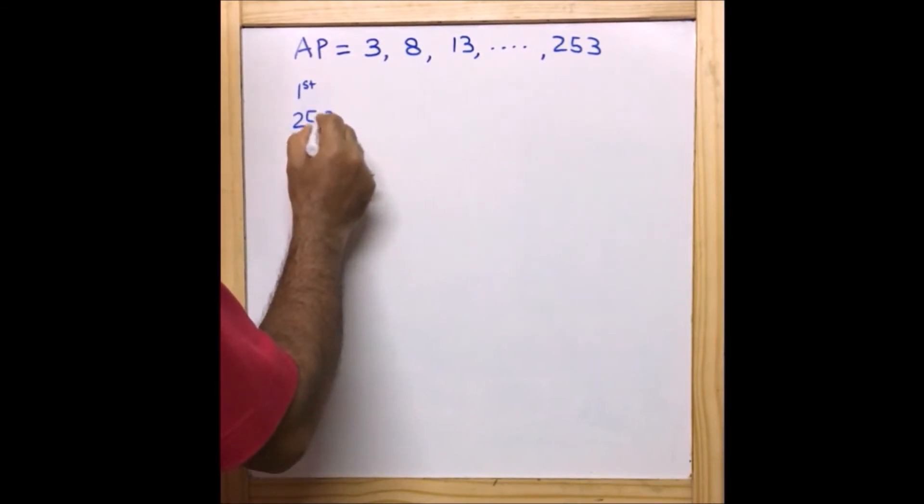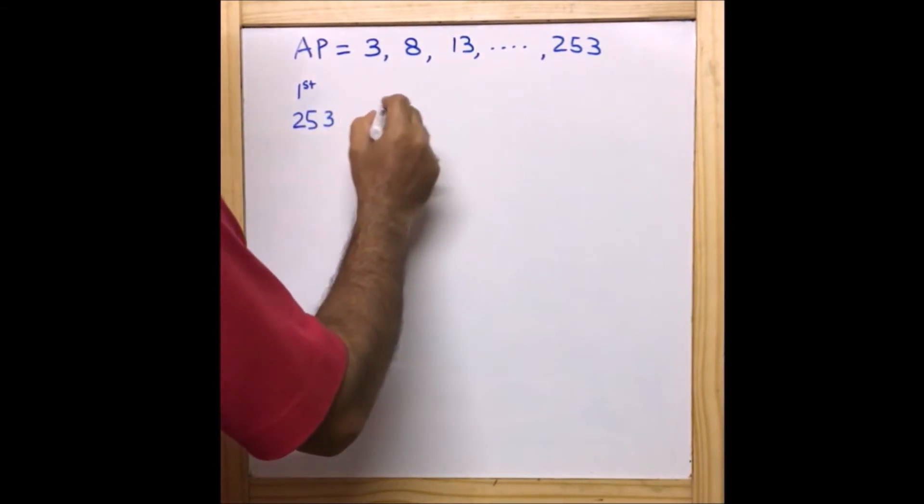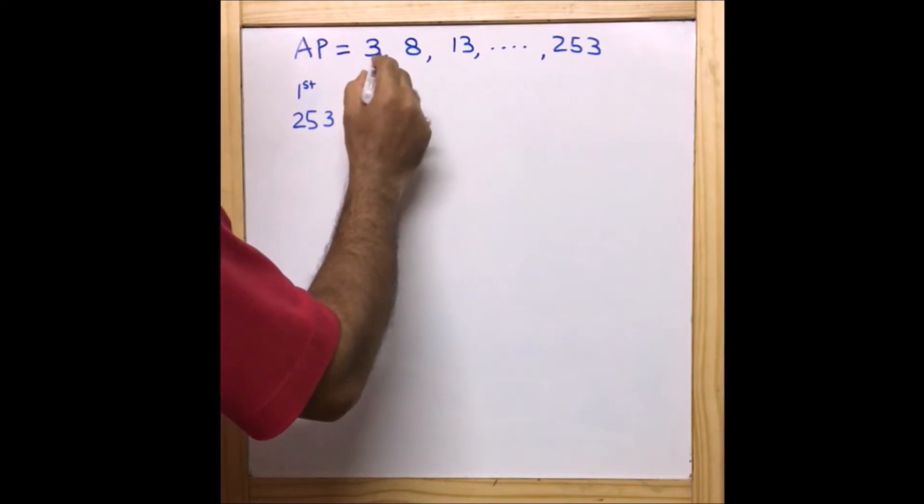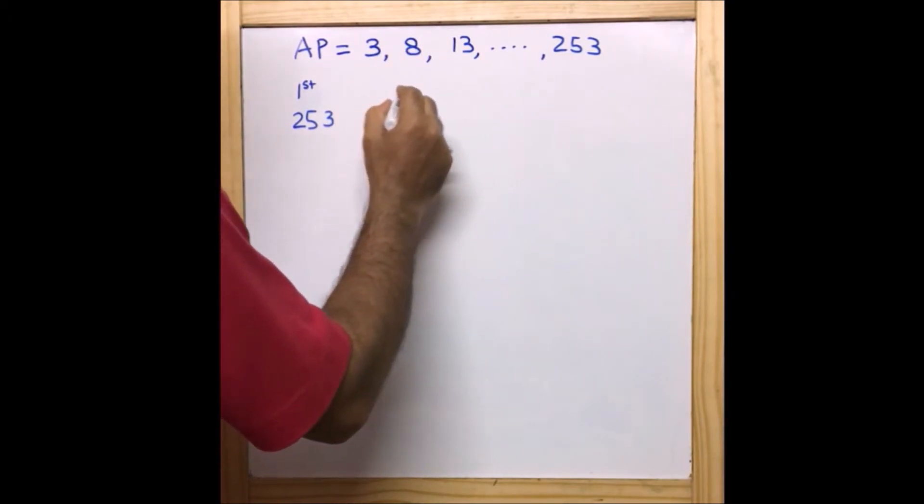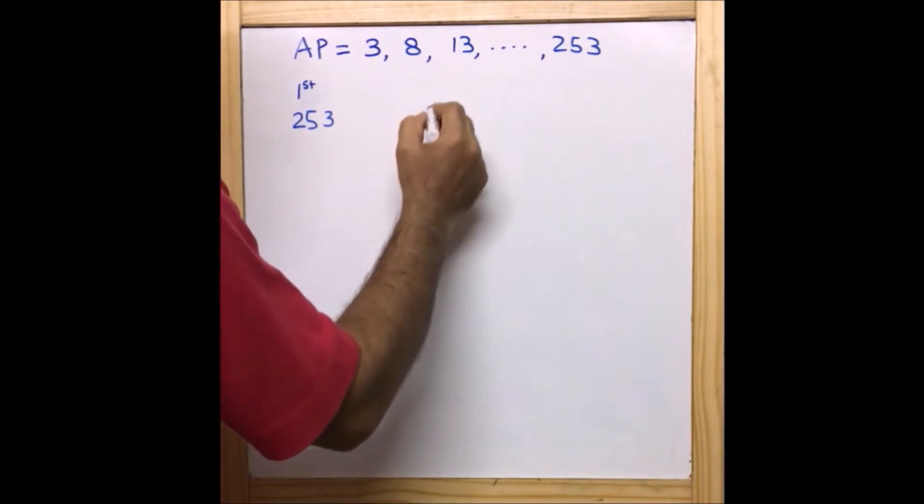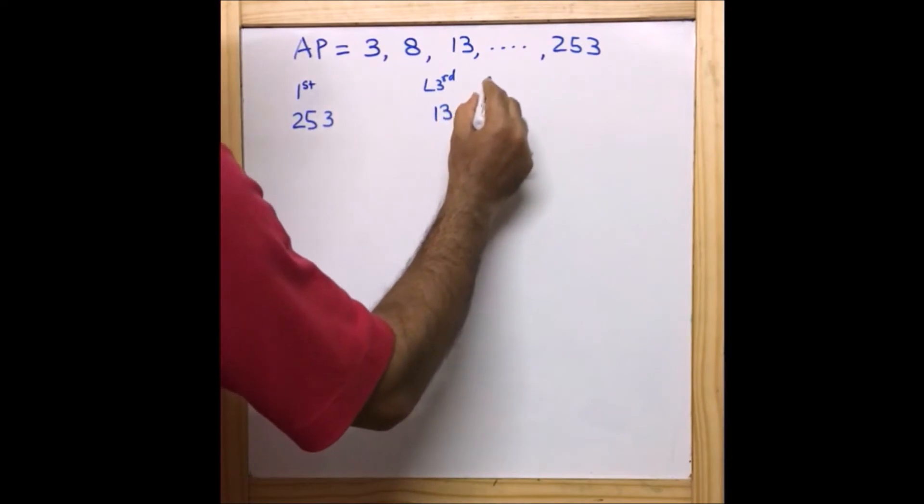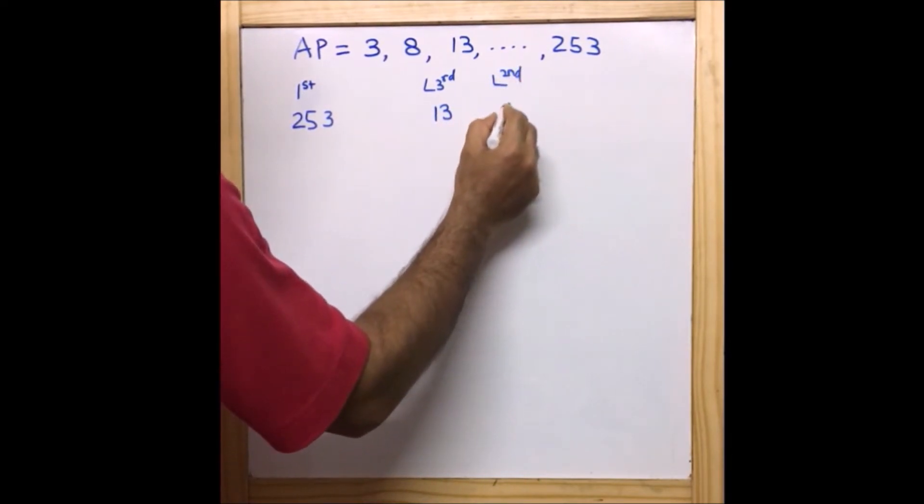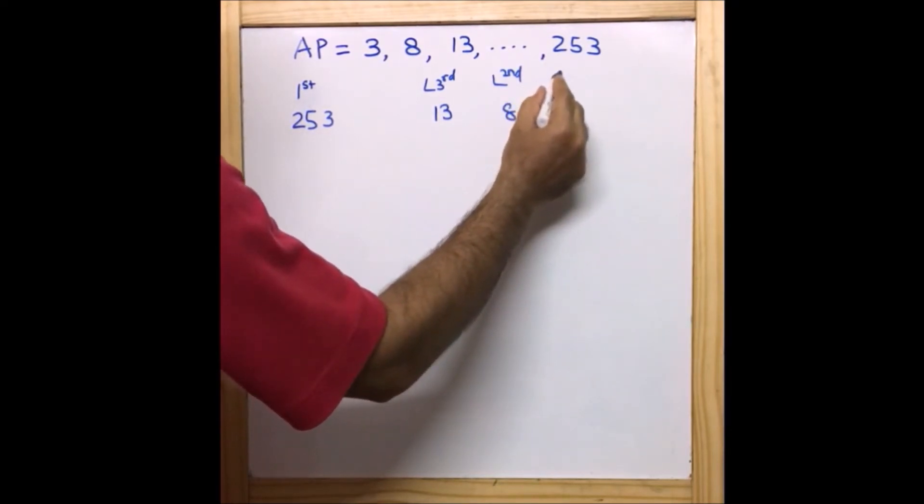From 3, 8, 13, from the last, 13 is the third term which is nothing but 13, and from the last second term is 8, and from the last first term is 3.